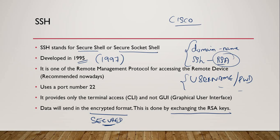SSH is more secure because security keys are generated as part of the process. SSH uses port number 22, while Telnet uses port number 23. SSH is the most recommended protocol nowadays.